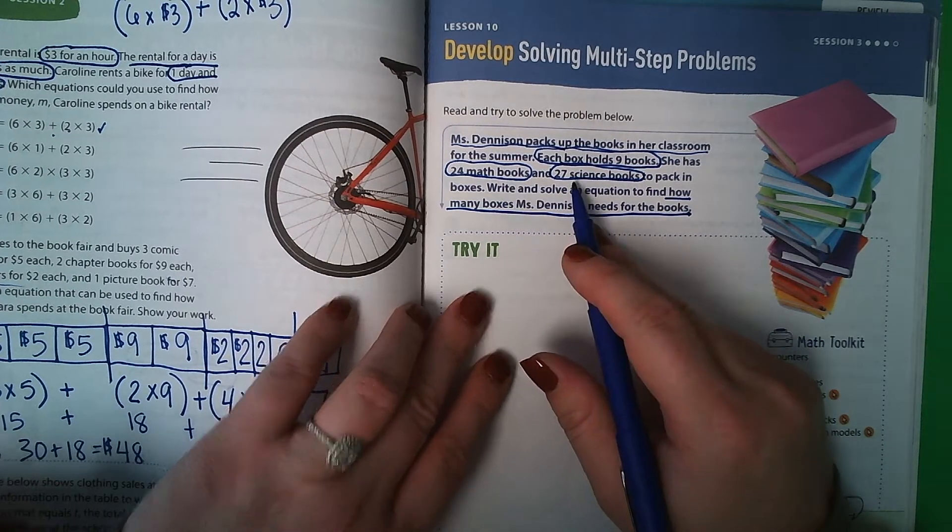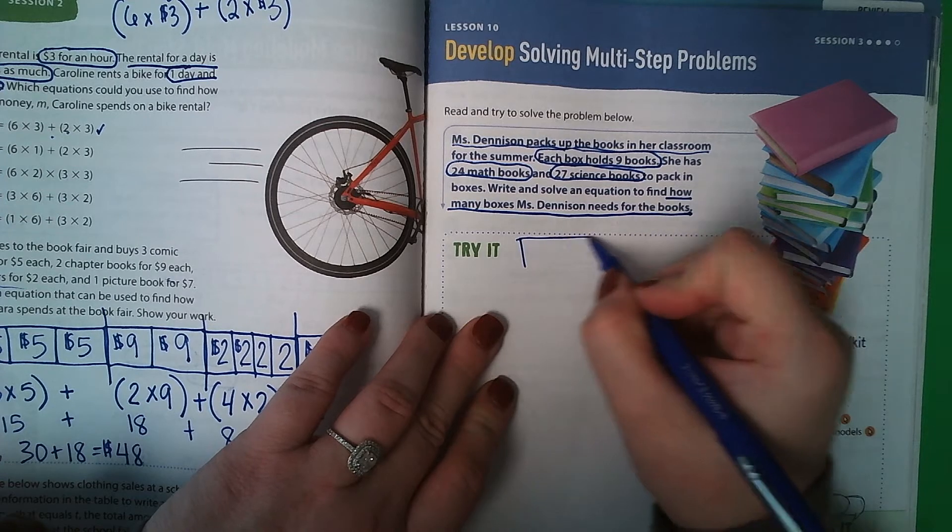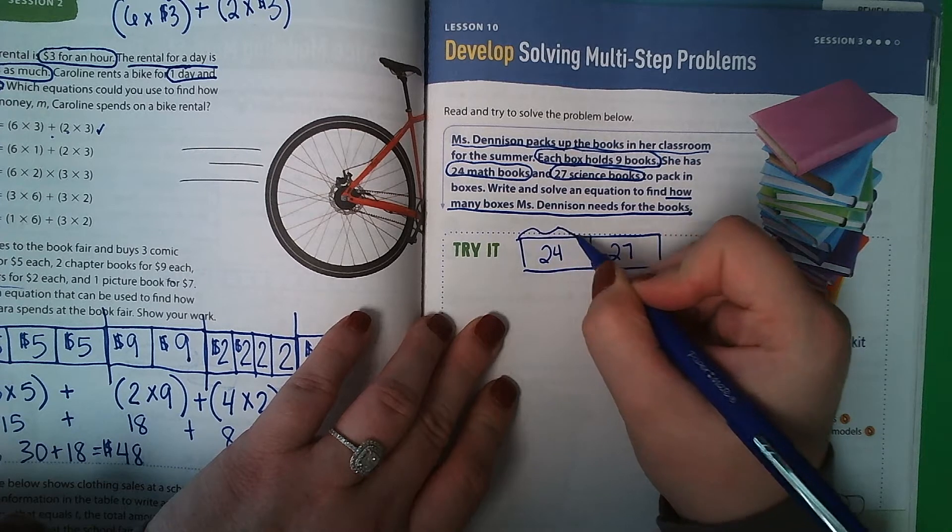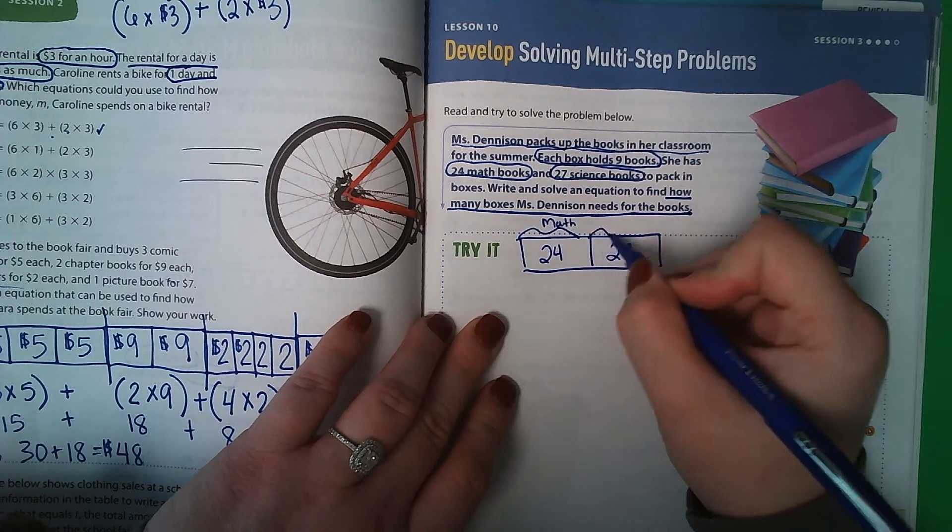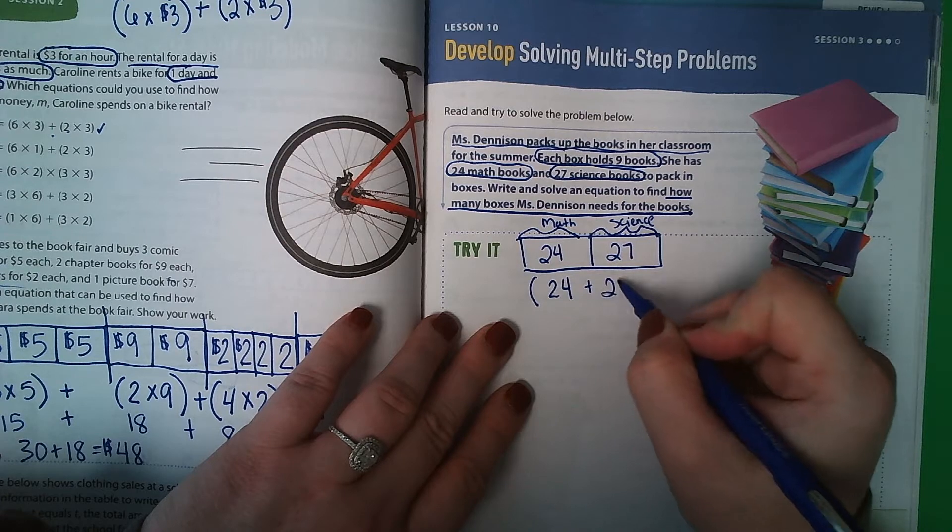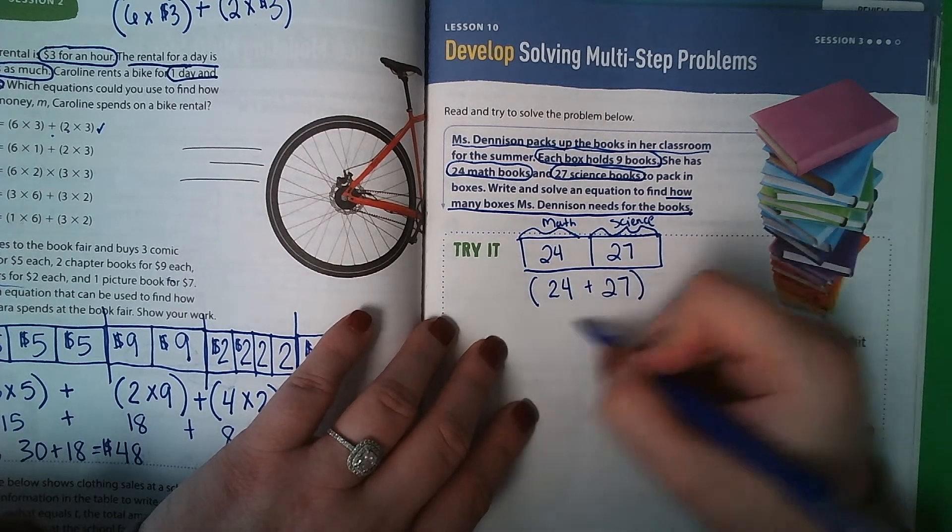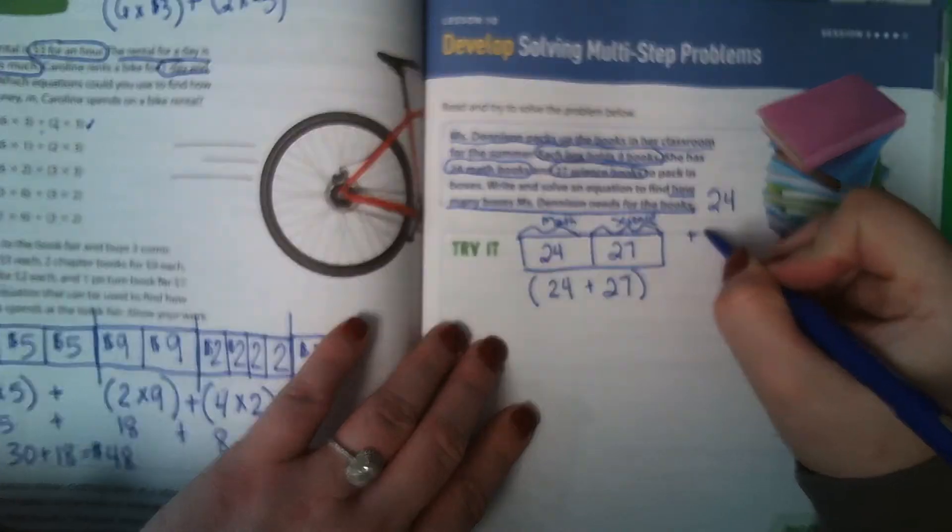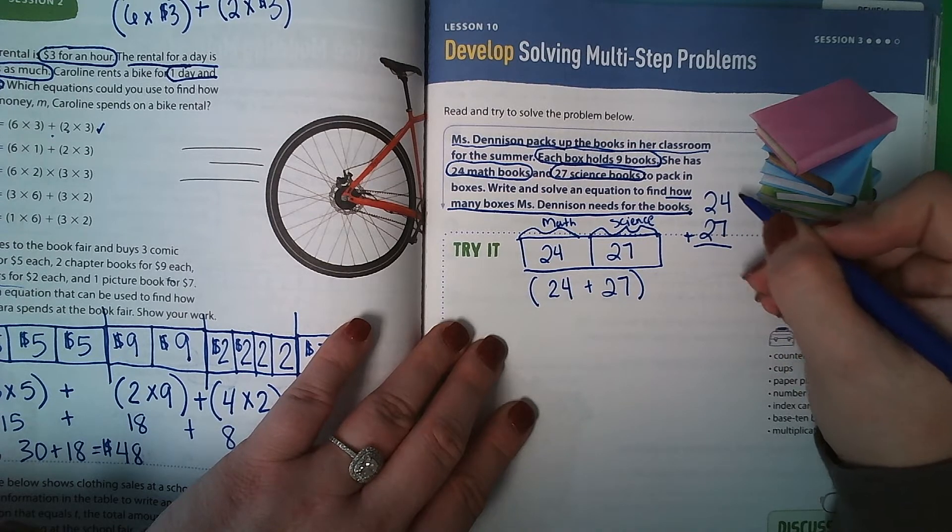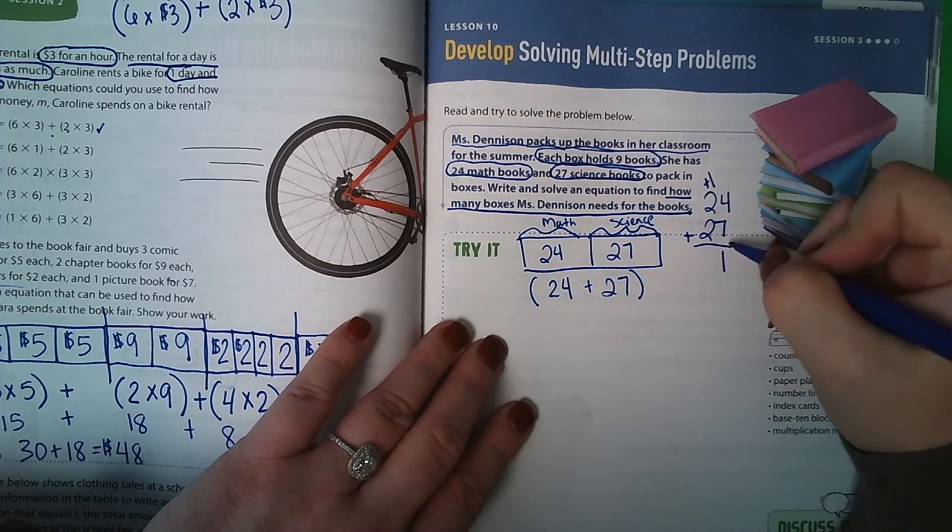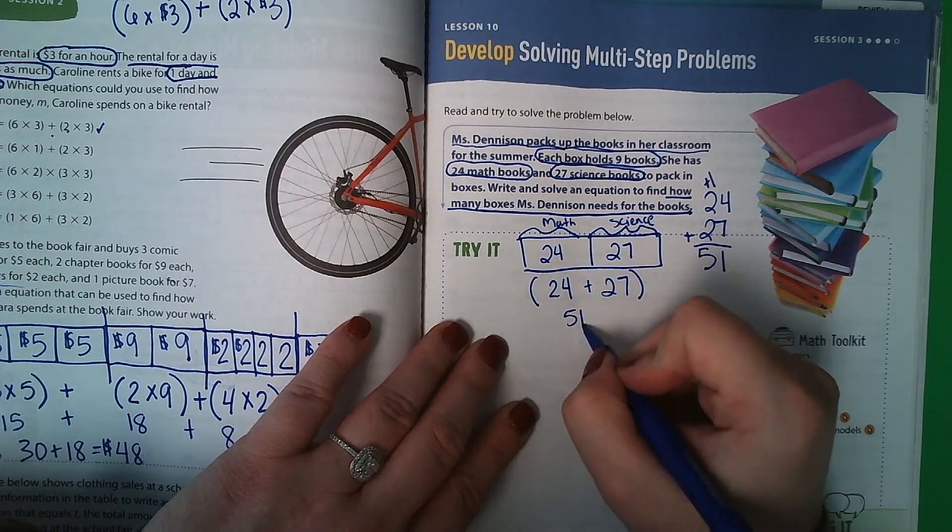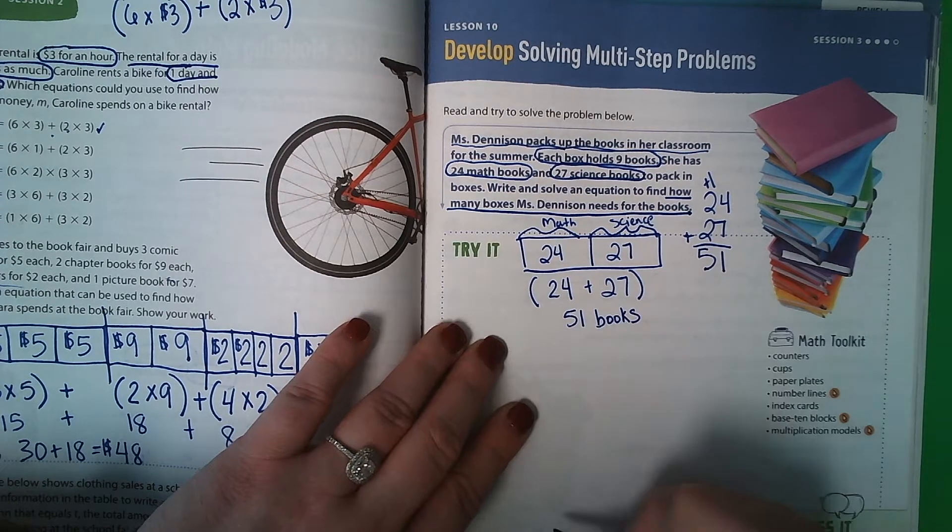She has 24 math and 27 science. So I can draw a picture of this, because this is math, and this is science. So if I add those together, how many books total? I don't like adding side by side, because I think it's too easy to mess up. So I'm going to rewrite it on top of each other. 7 plus 4 is 11. I'm going to add 1. 2 plus 2 plus 1 is 5. So she has 51 books total to pack.